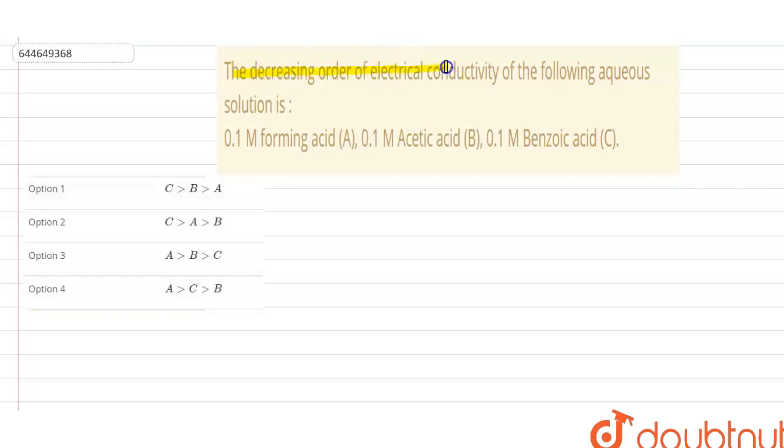Hello, our question is the decreasing order of electrical conductivity of the following aqueous solutions: 0.1M formic acid, 0.1M acetic acid, and 0.1M benzoic acid.